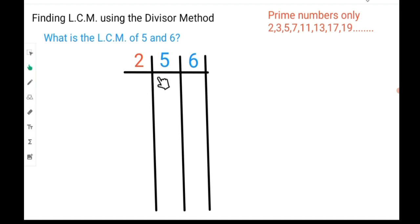Can 2 go into 5 without leaving a remainder? No, it can't. So the 5 would remain as is. Can 2 go into 6? Yes, 2 can go into 6. How many times? Three times. Therefore, we are finished with our first step of using 2.